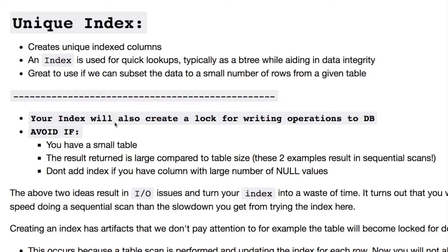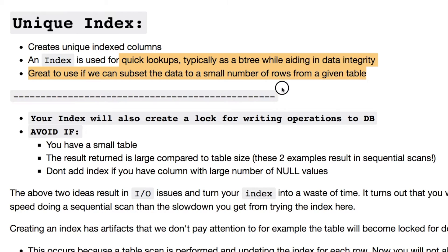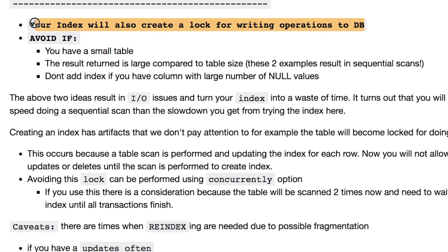The unique index is a little different. This is creating indexed columns which are unique. It's really good for fast lookups and it typically uses a B-tree by default, aiding in your data integrity. It's great if you need to subset a small number of rows for a given table. If you have a large number of rows and it can subset into something very small, it's a good use case. But if you end up doing a subset and the result is a large number versus your actual table, don't use it.